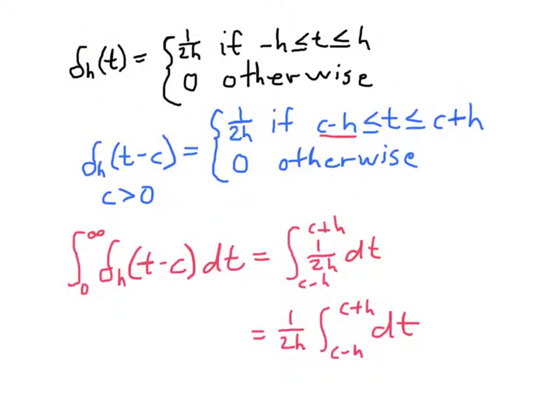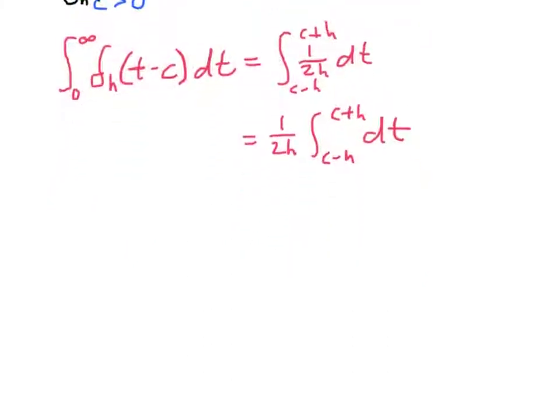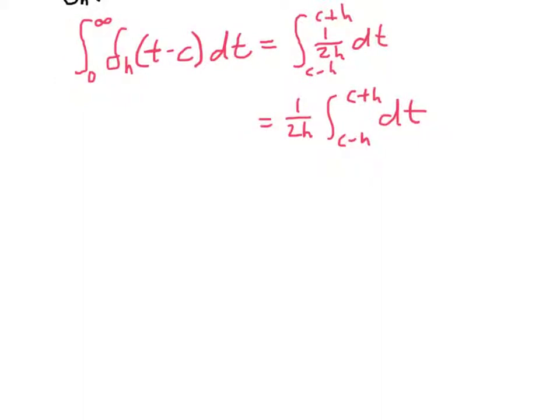sorry about all this crazy moving. The integral of dt is simply t. So this turns out to be 1 over 2h times the quantity c plus h minus the quantity c minus h.